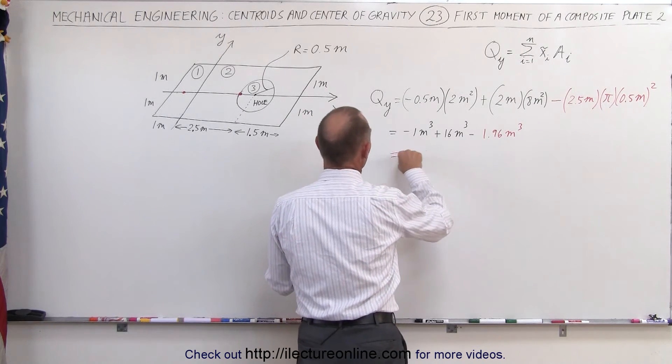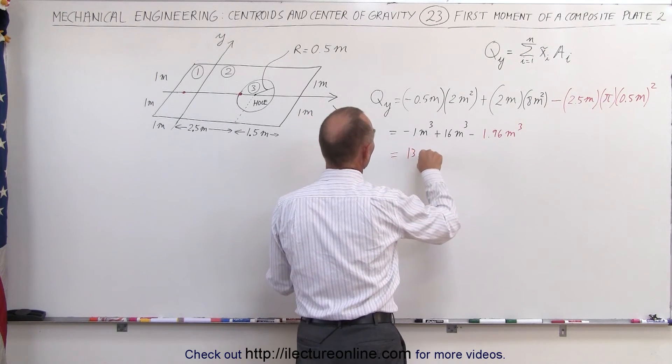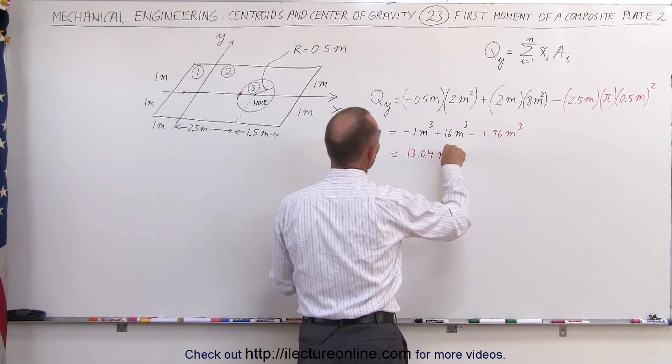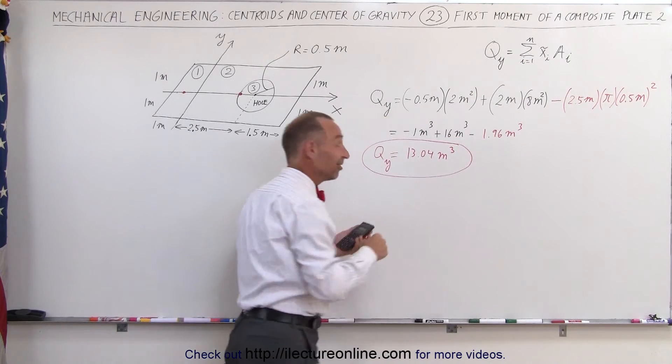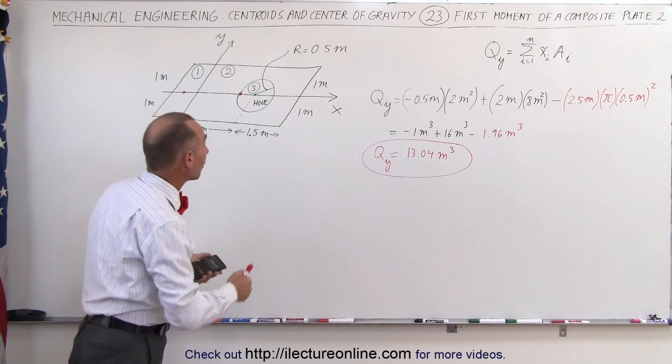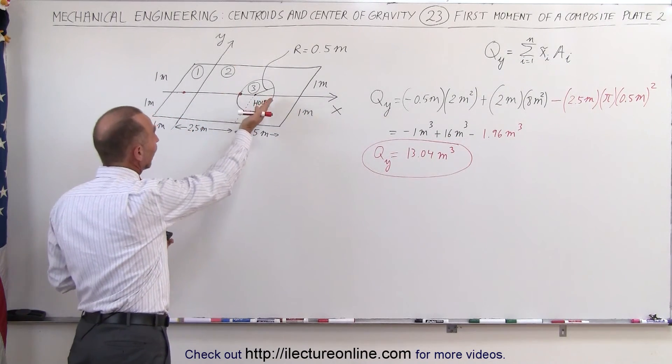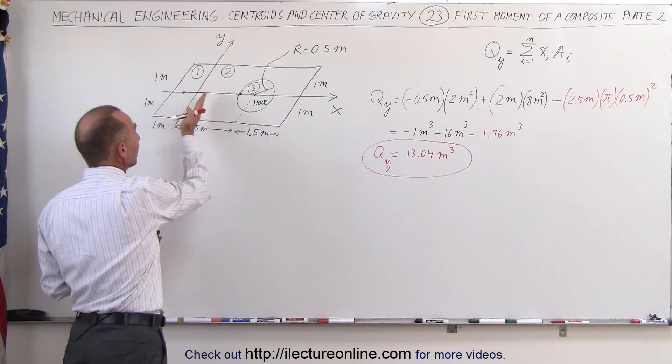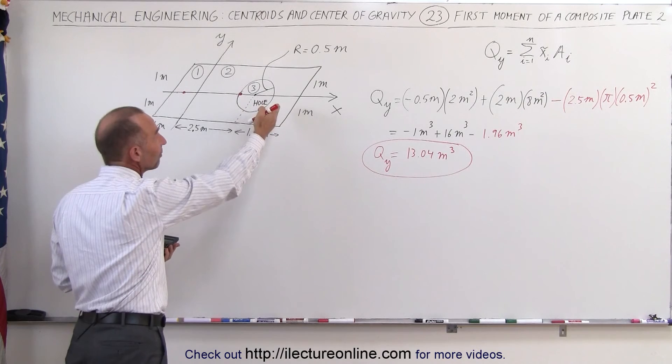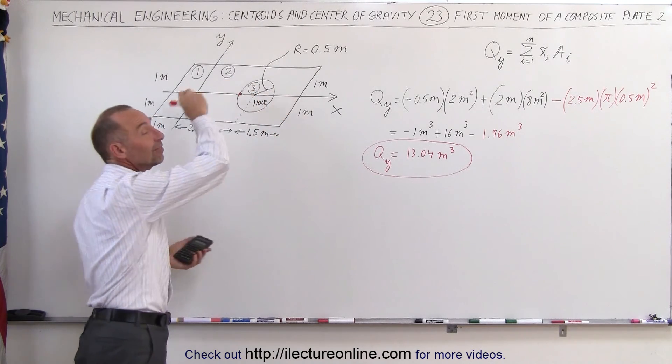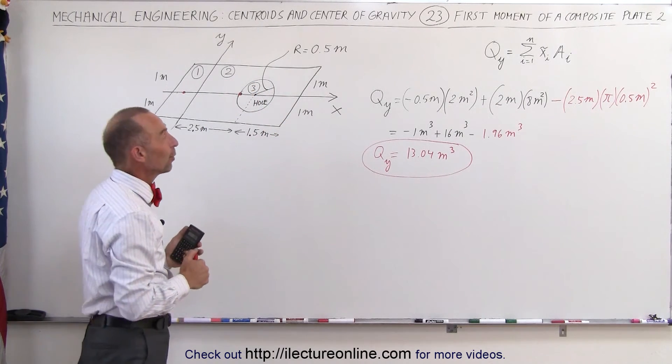A positive 13.04 meters cubed and that would be the first moment about the y-axis. This is a good example, you can see now that when you have a hole, you actually subtract it. Anything to the left side is subtracted, because that's on the negative side of the y-axis. Anything to the right is normally positive, because it's on the right side of the y-axis, unless it's missing mass, that would be negative as well.